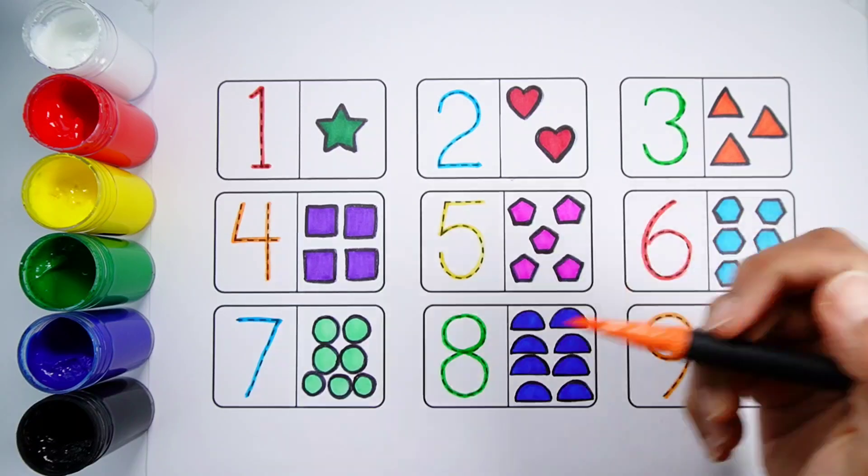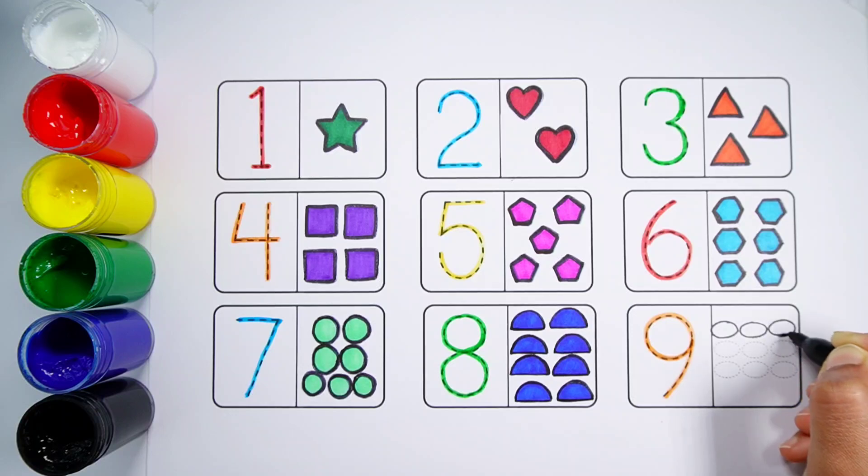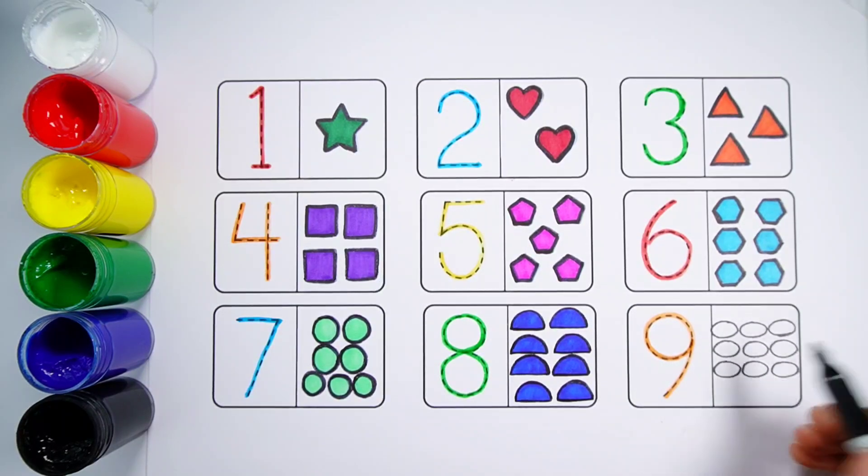Number 9. One, two, three, four, five, six, seven, eight, nine. Nine ovals.